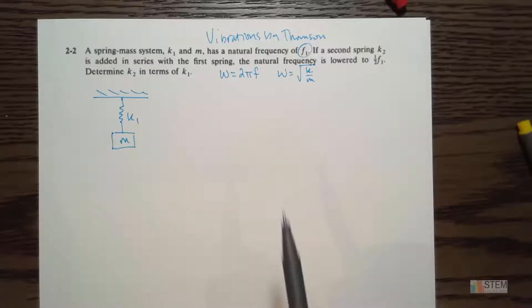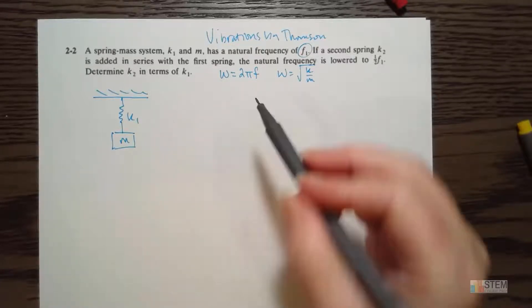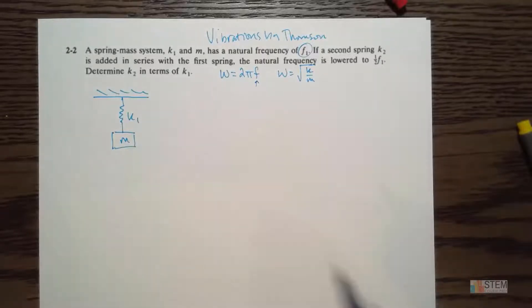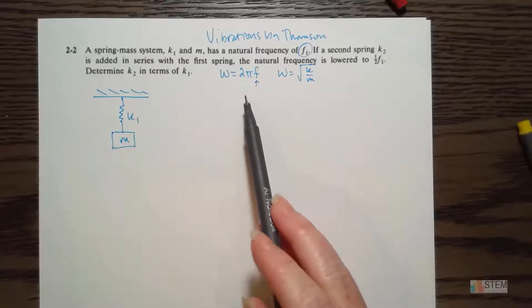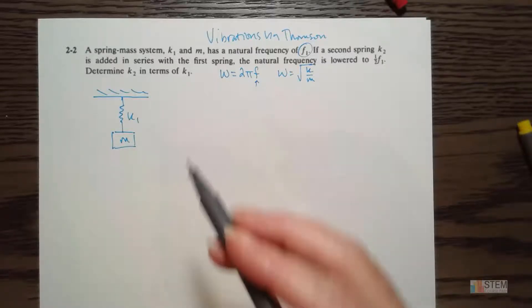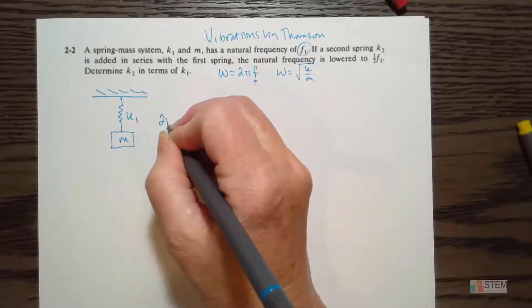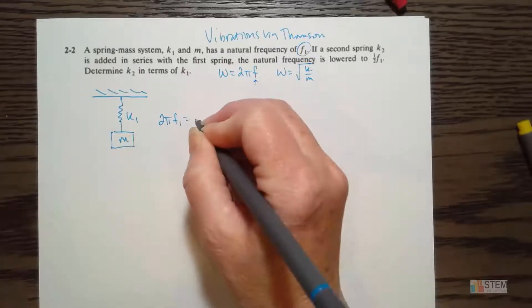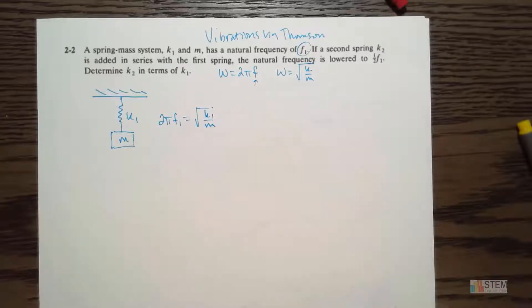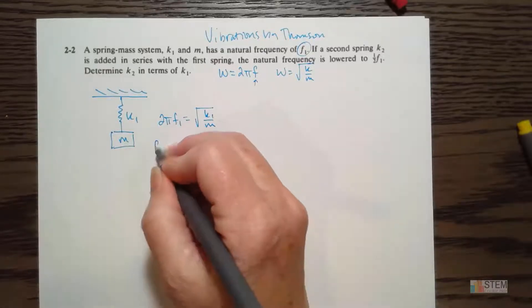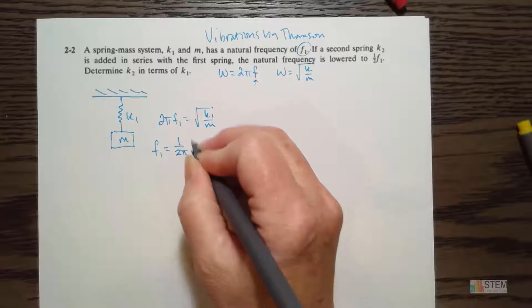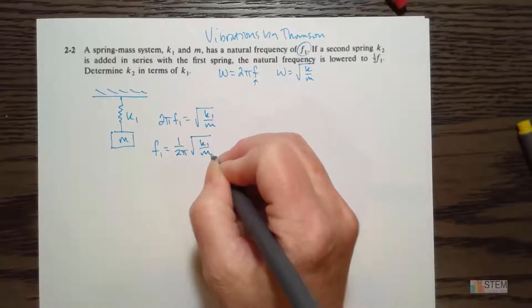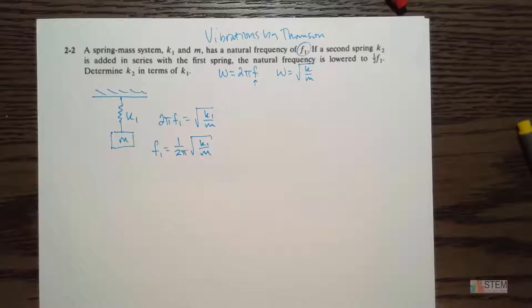So we want to use these for this problem because we're going to focus in on f here. So for this system, what I want to do is I want to solve for f1. I know I have both of these, they're both equal to omega. So that means I can say that 2 pi f1 has to equal the square root of k1 over m. And then let's solve for f1. So just bring the 2 pi down here. So we'll have 1 over 2 pi times the square root of k1 over m.